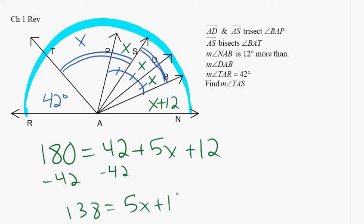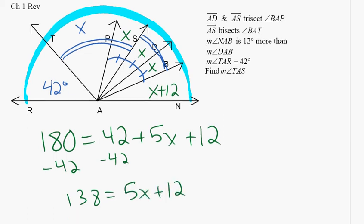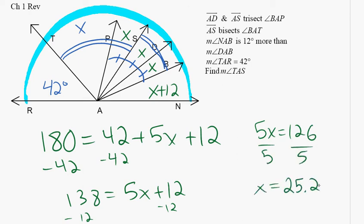Then what'd you do? And what are we looking for? TAS is worth two of those X's. We know one of the X's is 25.2, so two of them's worth what? 50.4.